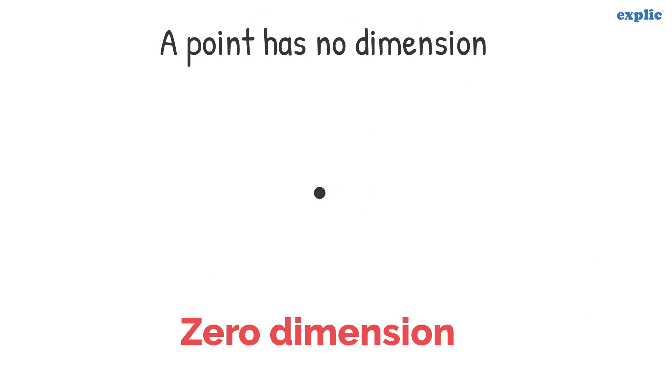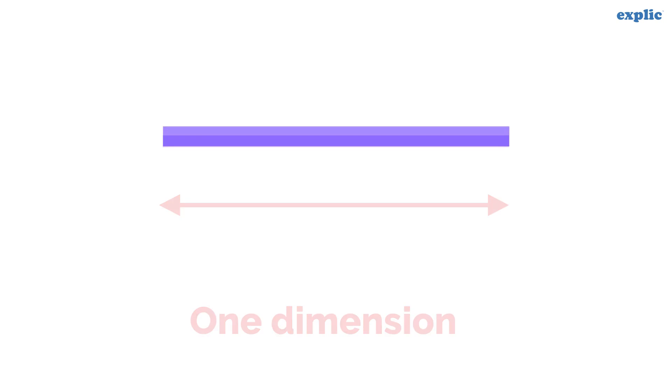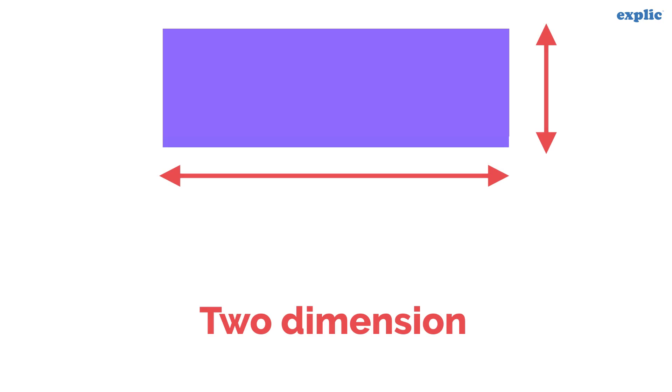A point has no length, no height, and no breadth. Basically, a point has zero dimension. A line is a one dimensional shape because it has only length. A rectangle is a two dimensional shape because it has length and height both.